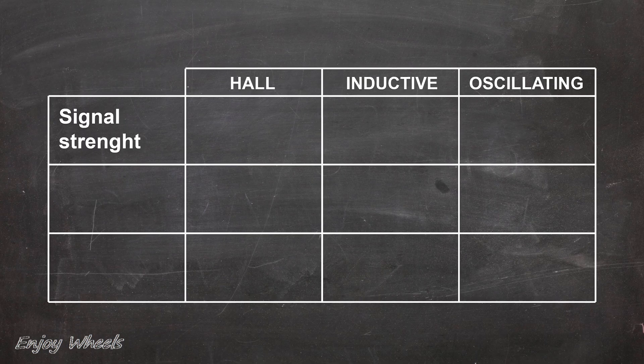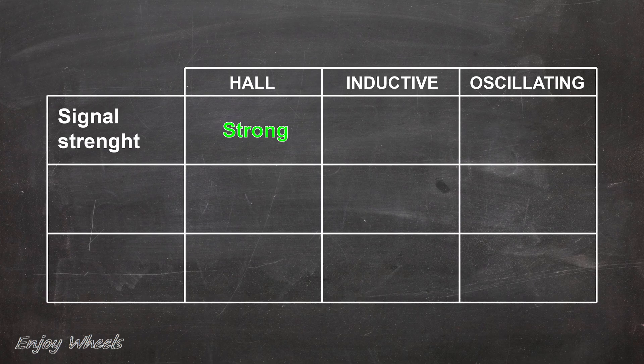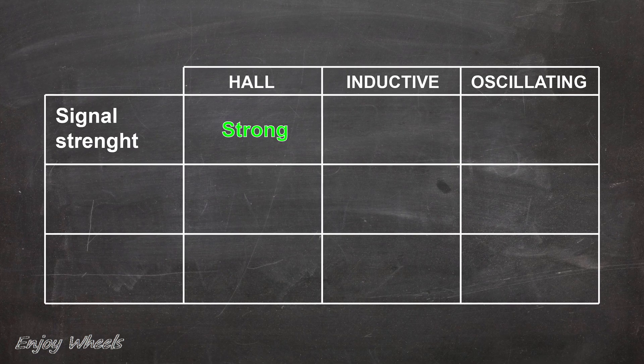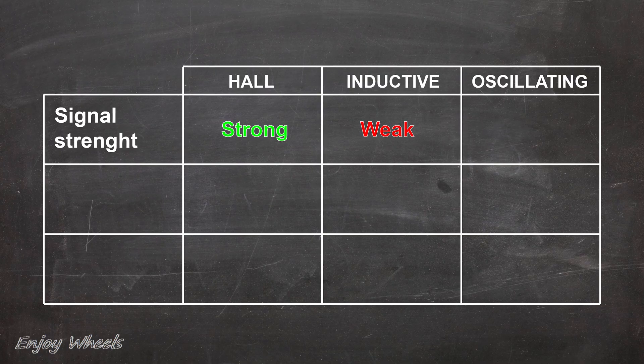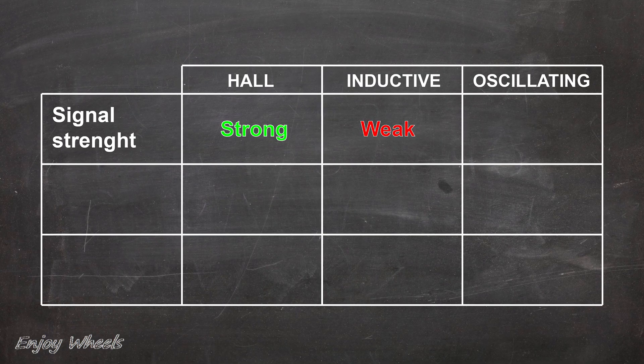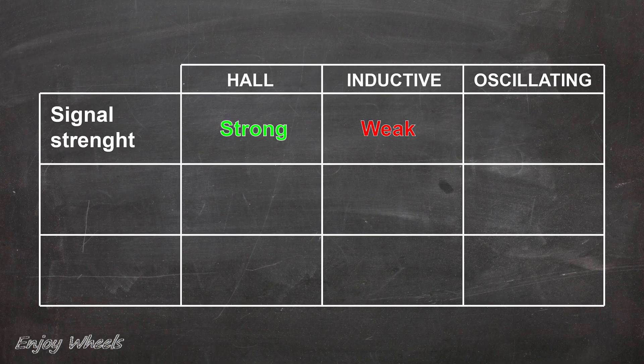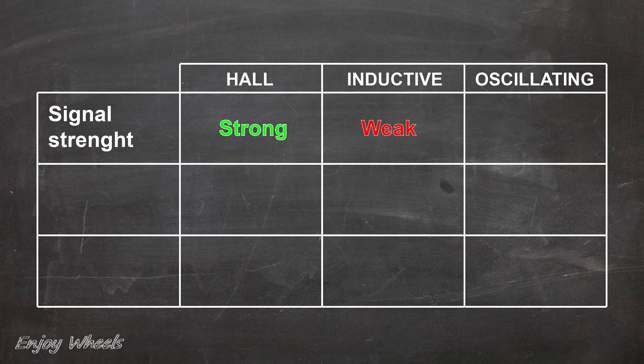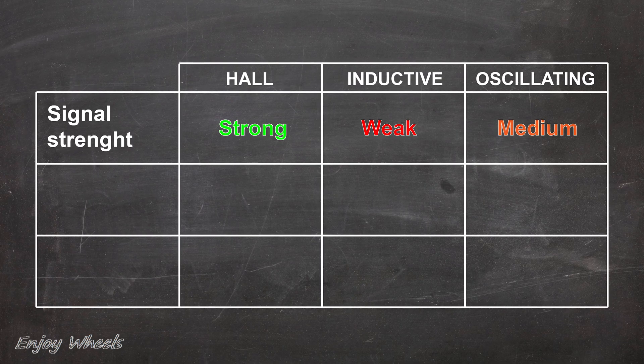Hall effect sensors provide a 12-volt square signal, which is strong, and very easy for the computer to interpret. While the inductive sensor provides a very weak signal, a few millivolts, this signal can more easily be disturbed and must be amplified by the computer. The oscillating inductive sensor is a little in between. The signal can certainly be strong, but the difference between the high and low level is smaller than for the Hall effect sensor.